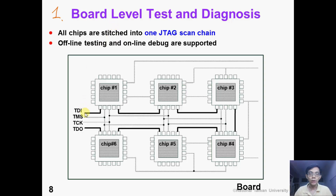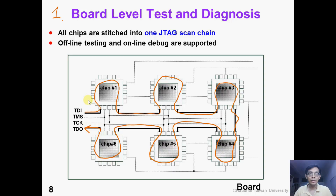Suppose on this board we have six chips. If we want to test the board and all the chips on the board, we need to stitch all the chips into a long JTAG scan chain. By doing the boundary scan chain, we are able to test the chips. JTAG enables board-level testing and diagnosis. Please note that this testing can be done offline or online — that means we can debug the board while the board is in normal operation.